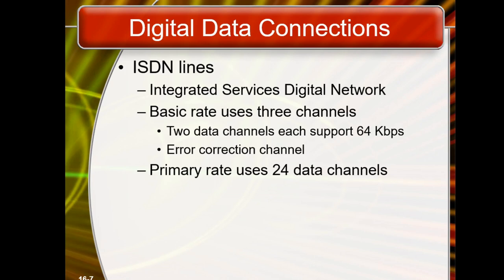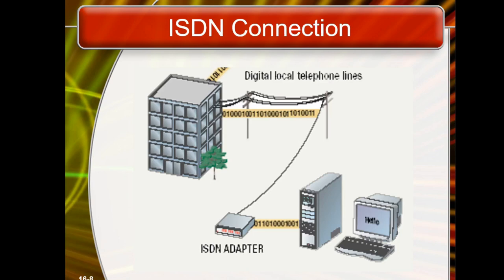Work on the ISDN standard began in 1980 at Bell Labs, and in 1988 it was given the name CCITT. So this is basically a network standard for data communication, transmission of voice, video, and audio data over a network. The primary rate uses 24 data channels. There are different channels. Digital local telephone lines are connected to an ISDN adapter, and data is transferred from your system via the ISDN adapter over those lines.